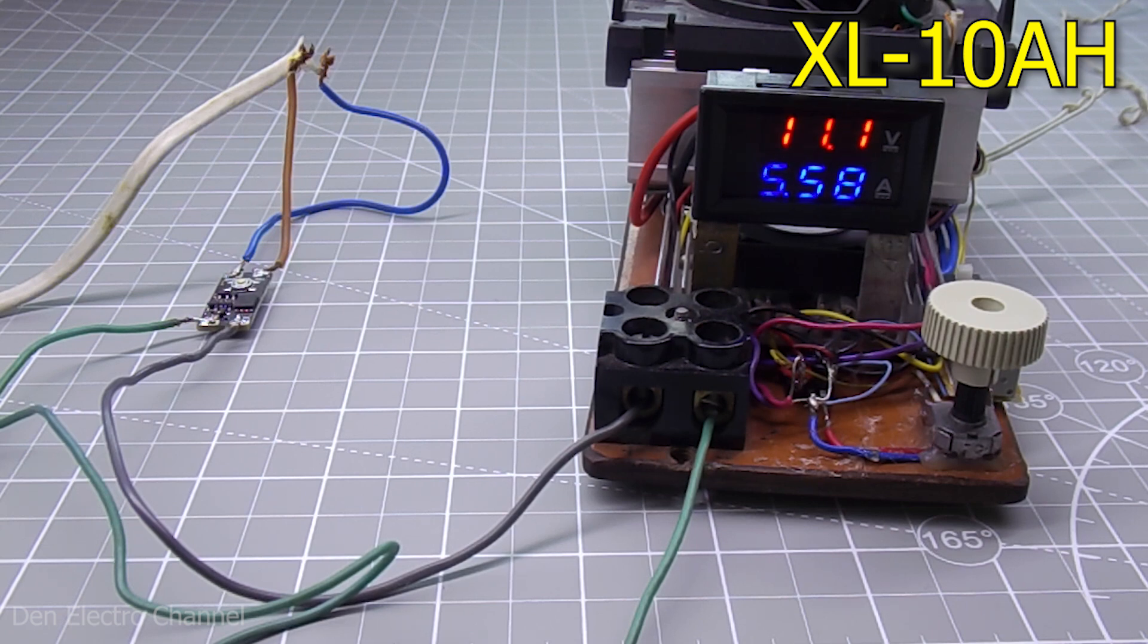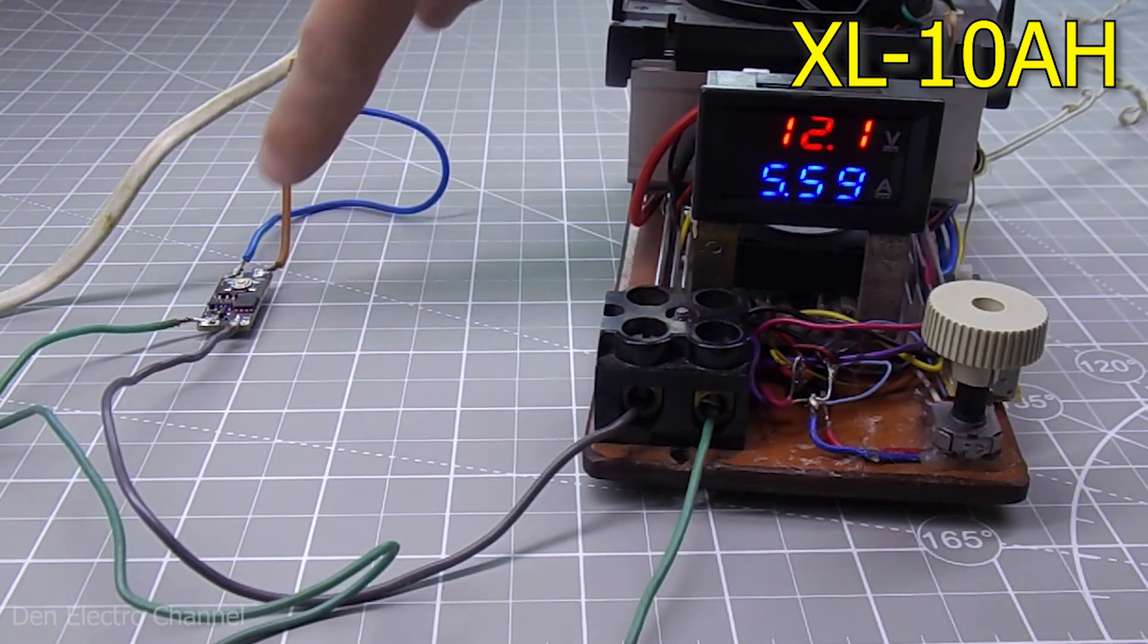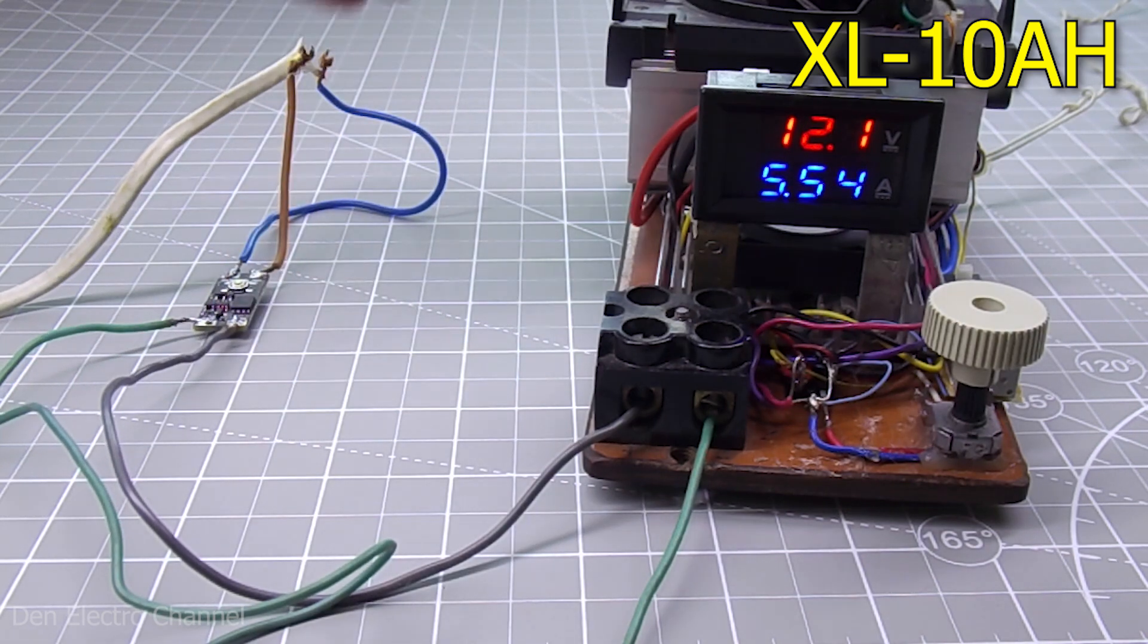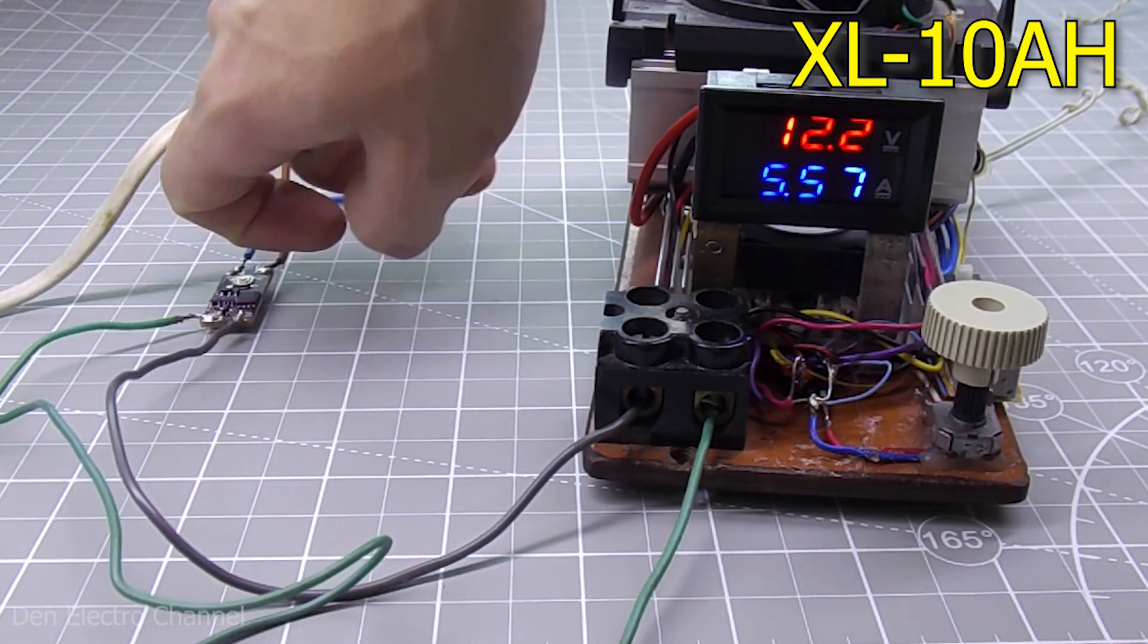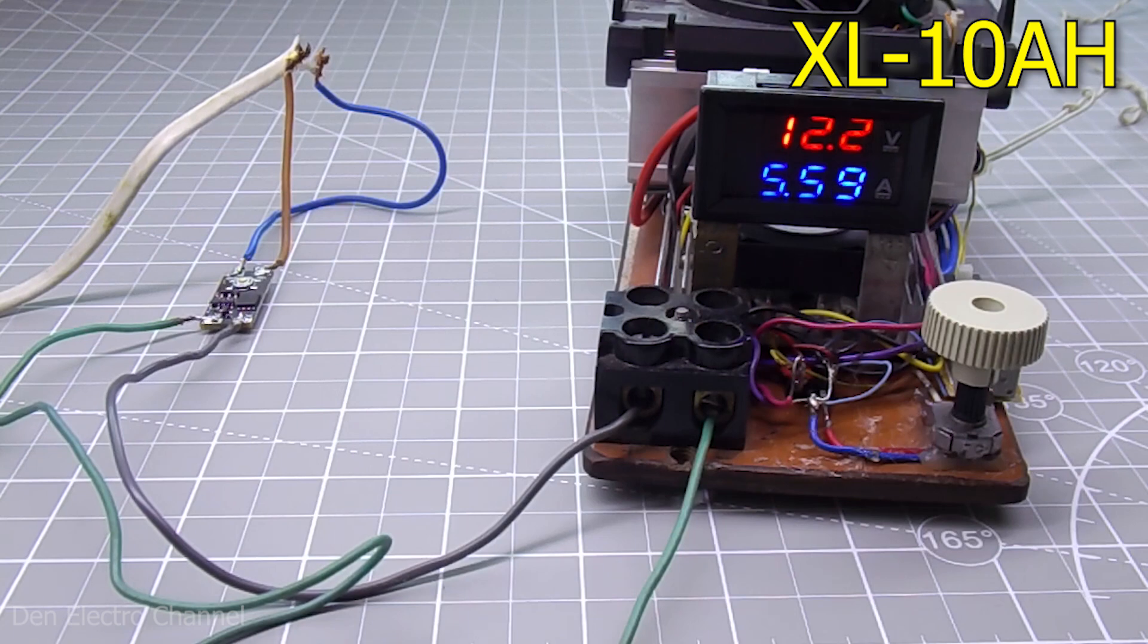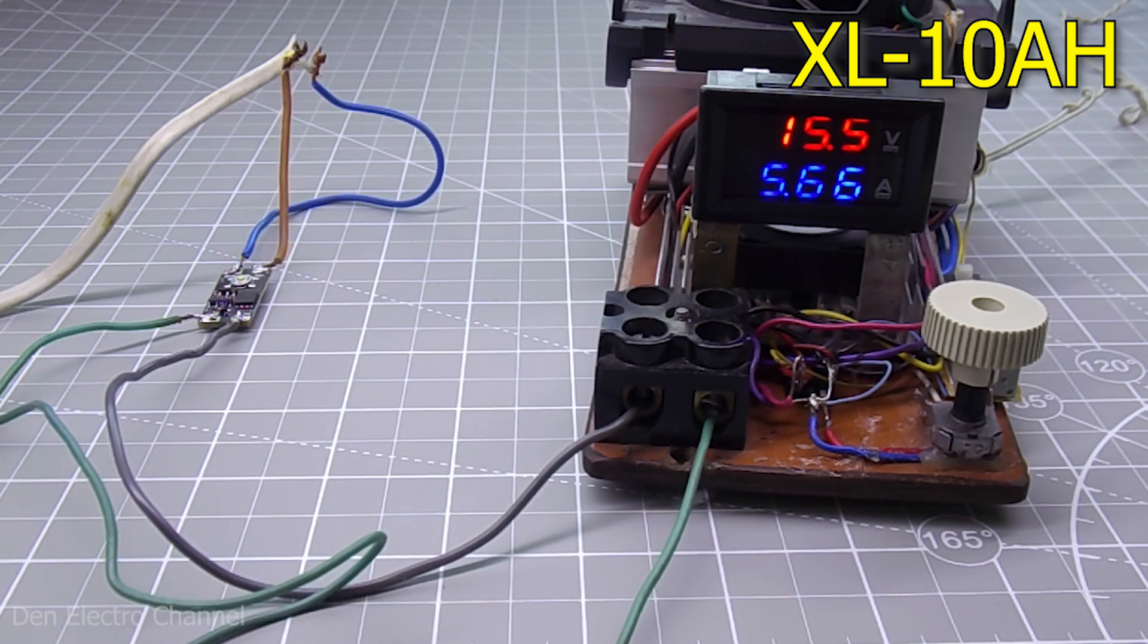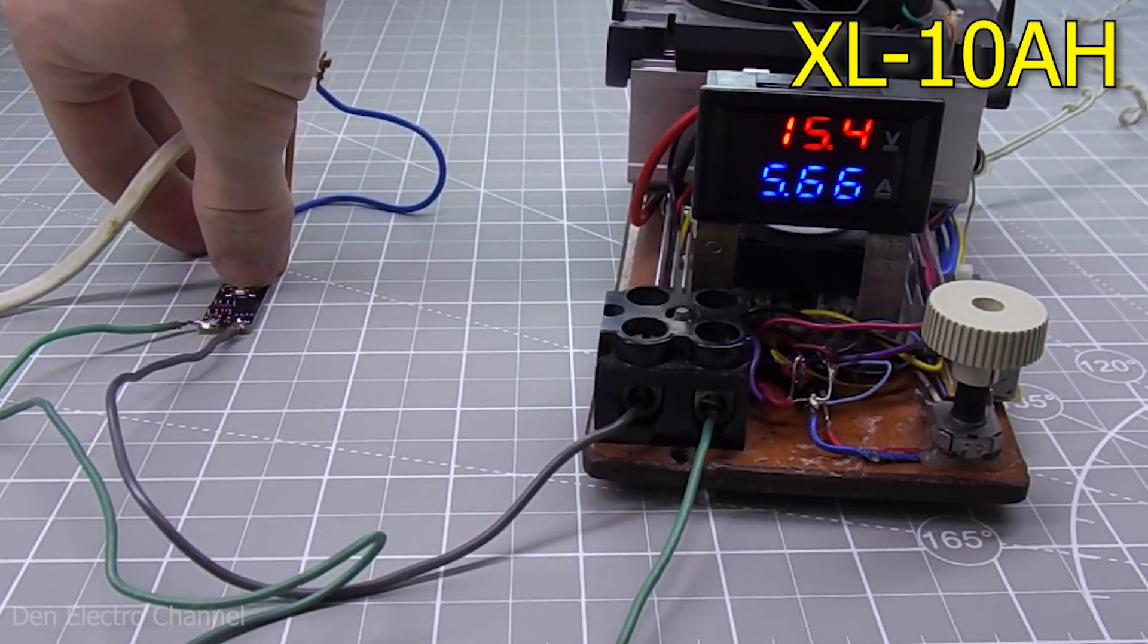I'll raise the voltage to 12 volts. I press the button on the module. It turns off and on. The board is still warm. There is no strong heating. I'll raise the tension a little more. At these current and voltage values, everything also works fine.